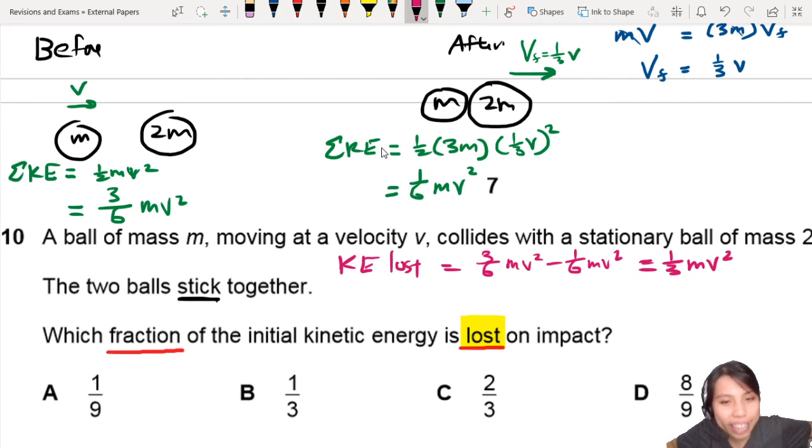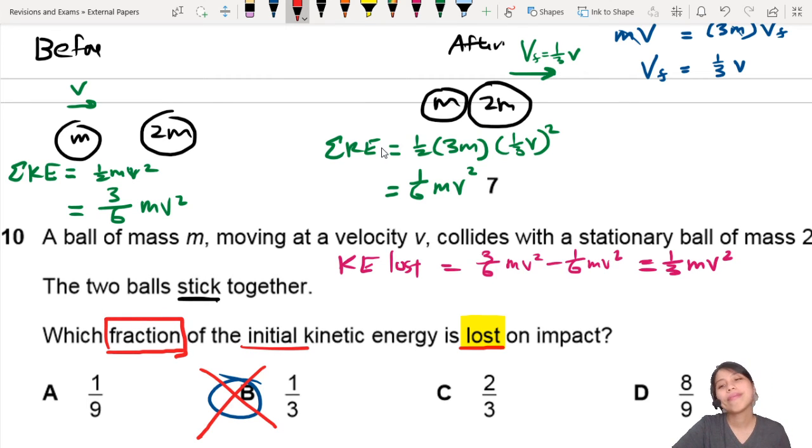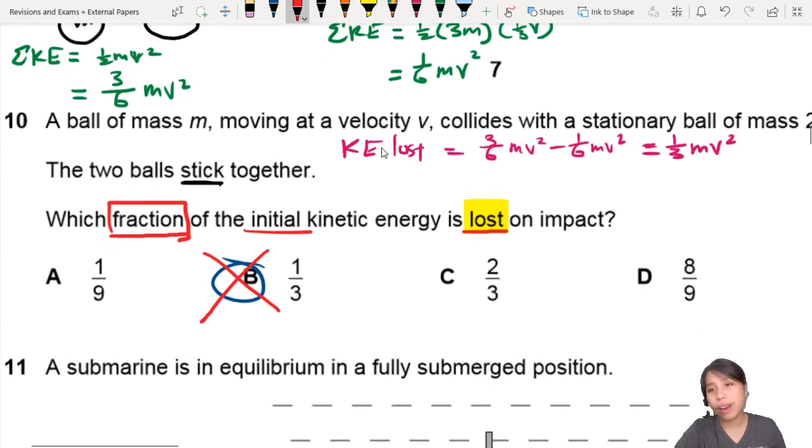Now, if you are very happy and you say, yay, I found the answer. The answer is 1 over 3. Whoa, slow down. We want a fraction of the initial kinetic energy. So 1 over 3 is not a fraction. It's not a ratio. You need to do the fraction.